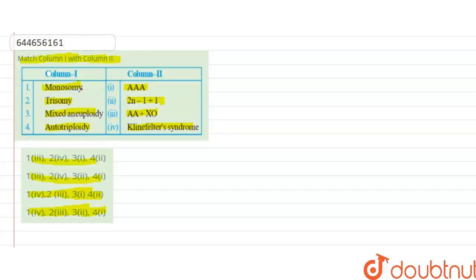Monosomy. Monosomy matches with double A plus XO. It's seen in female